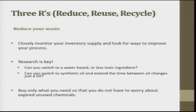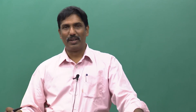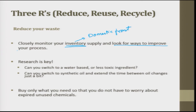Reduce your waste: closely monitor your inventory supply and look for ways to improve your process. For example, we go to a mall and pick up 3 soaps — buy 3 get 1 free — and end up buying 4 soaps, but a family can only consume 1 soap a month. If you have more inventory, you are going to consume more liberally or it might get wasted. So closely monitor your inventory supply and look for a way to improve your process. Can you switch to a water-based or less toxic ingredient? Can you extend the time between oil changes using synthetic oil?